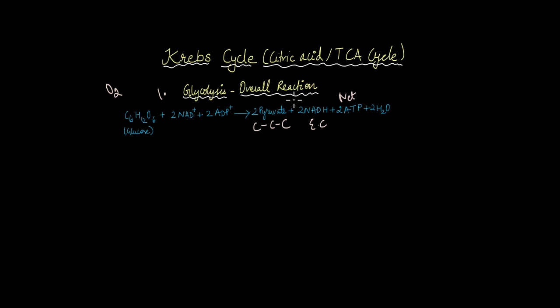So the process that pyruvate undergoes when oxygen is present is called the Krebs cycle or the citric acid cycle or the tricarboxylic acid cycle, TCA cycle. This takes place only in the presence of oxygen in aerobic organisms. Try to recall what happens to pyruvate in the absence of oxygen.